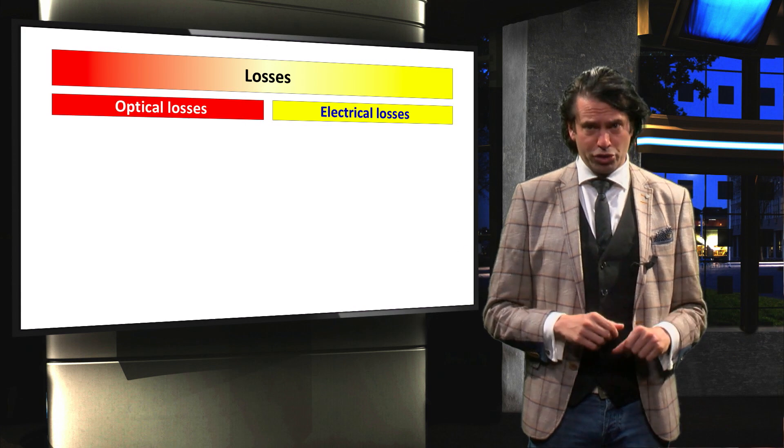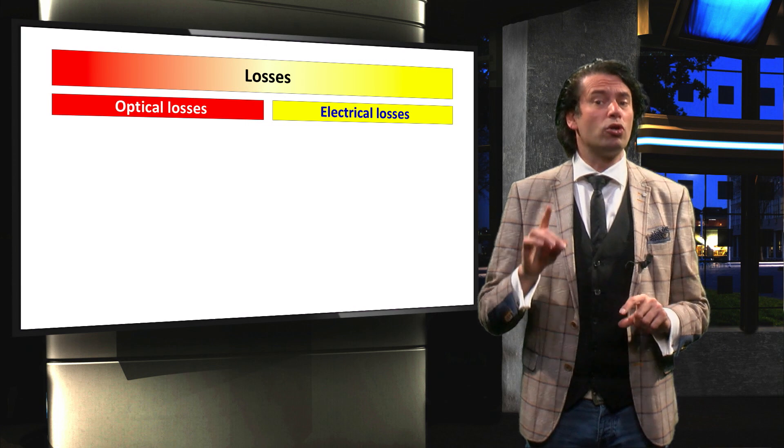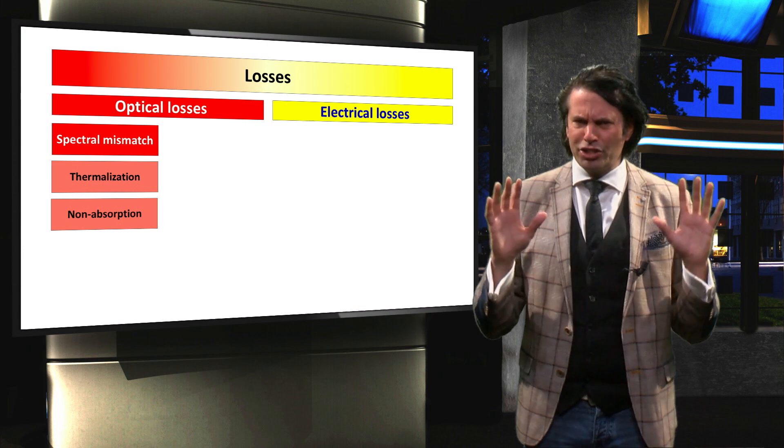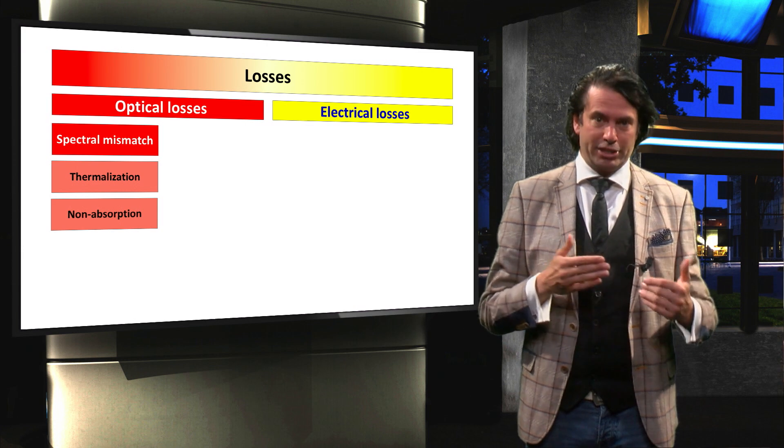The losses that occur in solar cells can be divided into optical losses and electrical losses. By far the largest losses occur due to spectral mismatch.